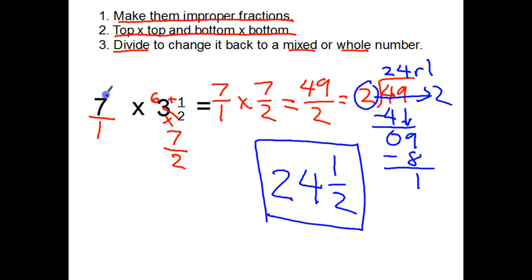Just check the whole number part here. If I did seven times three, that's twenty-one, which is pretty close to twenty-four and a half, so it makes my answer seem reasonable.